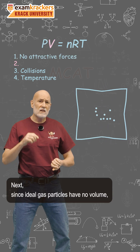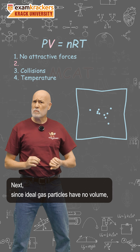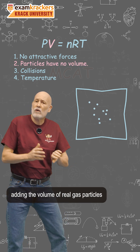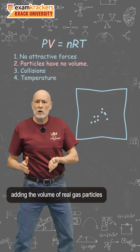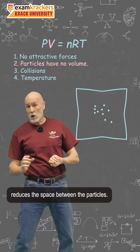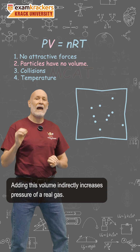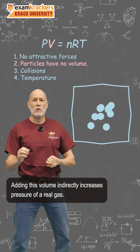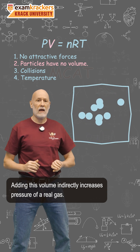Next, since ideal gas particles have no volume, adding the volume of real gas particles reduces the space between the particles, and adding this volume indirectly increases the pressure of a real gas.